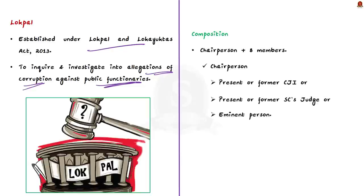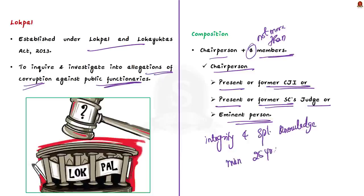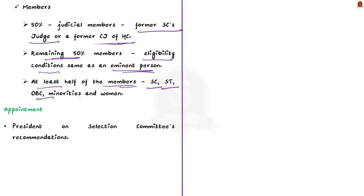The Lokpal consists of a chairperson and not more than eight members. The chairperson must be either a present or former Chief Justice of India, a present or former judge of the Supreme Court, or an eminent person with integrity and outstanding ability who must possess special knowledge and a minimum experience of 25 years in matters relating to anti-corruption policy, public administration, vigilance, finance including insurance and banking, law, or management. Fifty percent of the total members shall be judicial members — either a former judge of the Supreme Court or a former Chief Justice of a High Court. At least half of the Lokpal members must be from scheduled tribes, scheduled castes, other backward classes, minorities, and women.